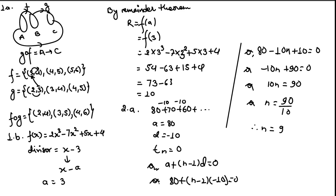Question number 1a: define composite function. A composite function means a new function formed by combining two or more functions. We can see here the function from A to B is f, and function from B to C is g. The function g of f, meaning starting with f and followed by g, from A to C is known as the composite function.